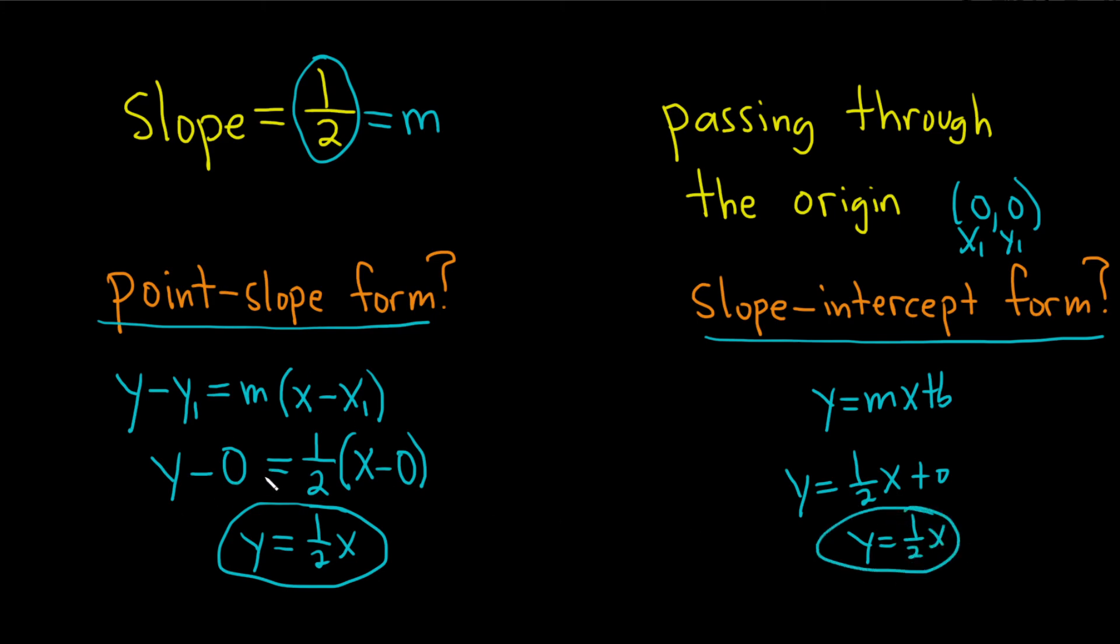So most of the time when you do a problem like this, you do this, and then you have to solve for y to get this. However, in this problem here, it was so simple because it was the origin, you didn't really have to do anything. So it's actually the same answer in both cases. Kind of an unusual situation. I hope this video has been helpful to someone out there in the world. Good luck to you.